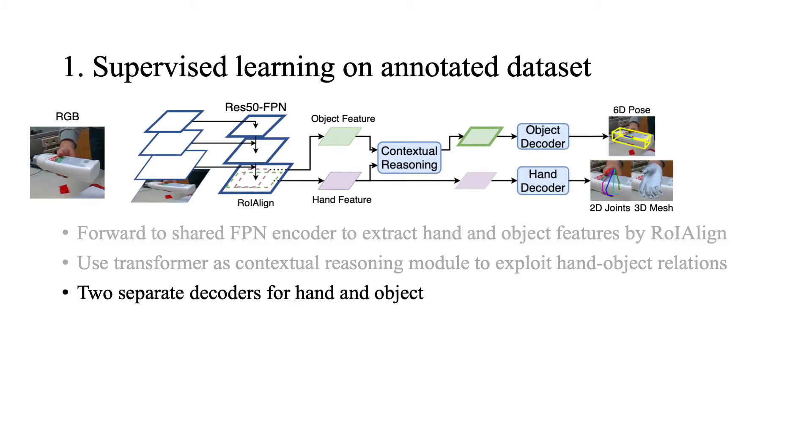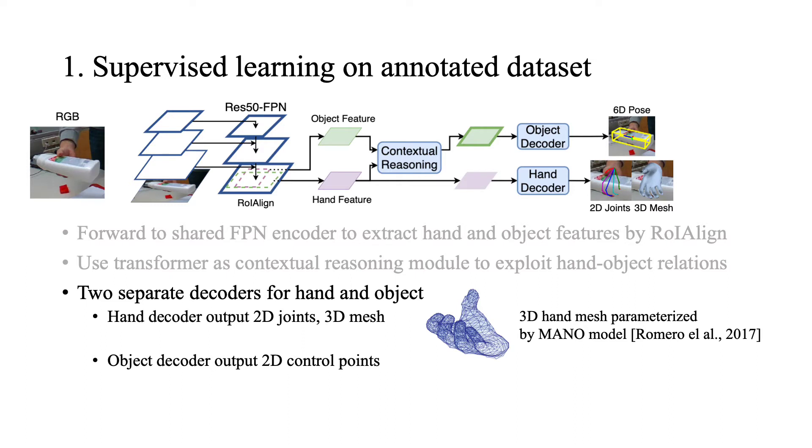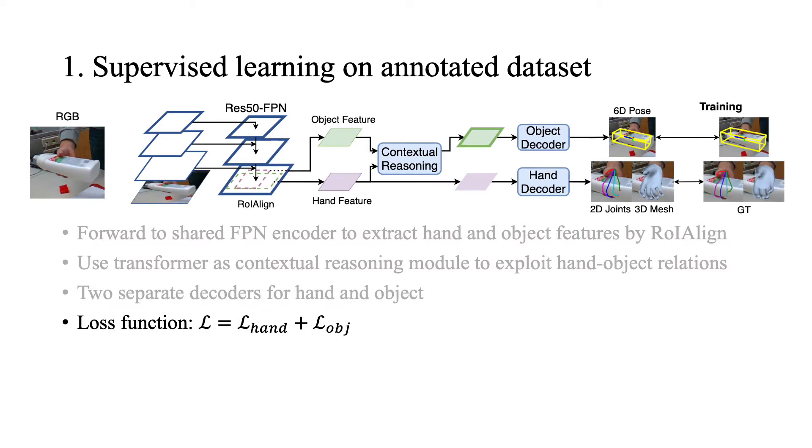After that, the hand and object features are sent to corresponding decoders. The hand decoder outputs 2D heatmaps for each joint and mono parameters. The object decoder predicts 2D location of predefined 3D control points and computes 6D object pose by the PnP algorithm using 2D to 3D correspondences of control points. The total loss function is the sum from two decoder branches.